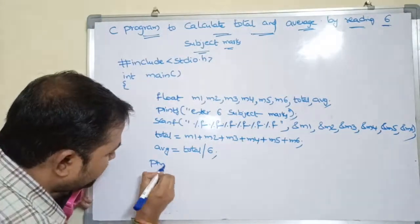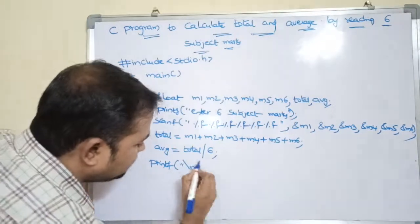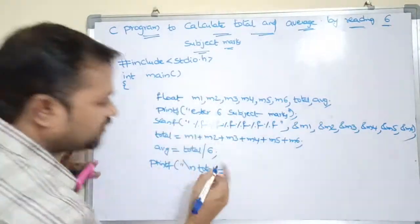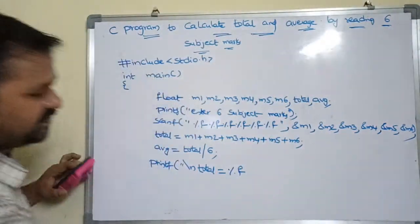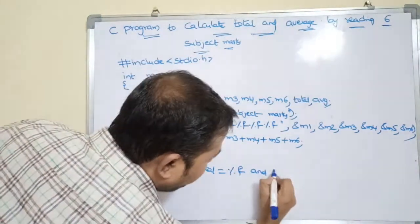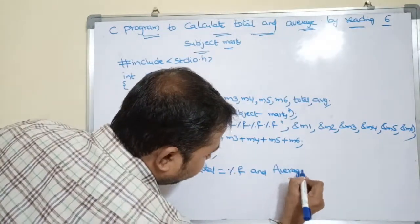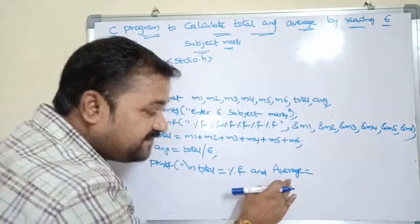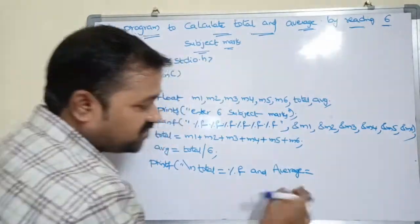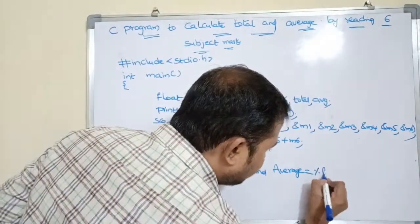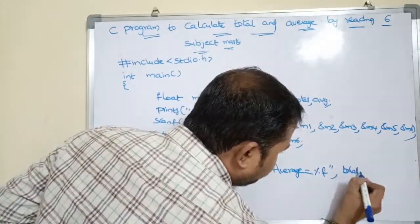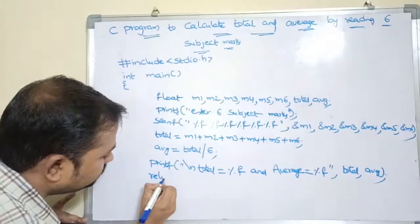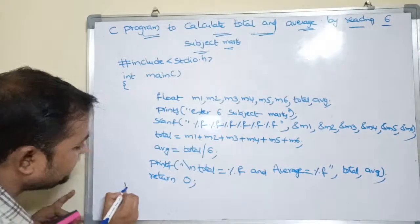Now display total and average. So printf("\nTotal = %f\nAverage = %f", total, avg). For float the format specifier is %f. The variable name for total is total and for average the variable name is avg. So printing is over. Next we have to return 0, because if the program is successfully executed then it returns a value called 0.